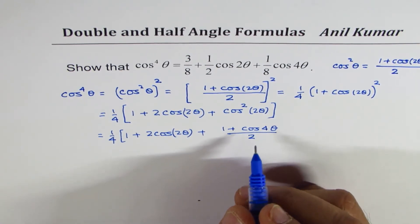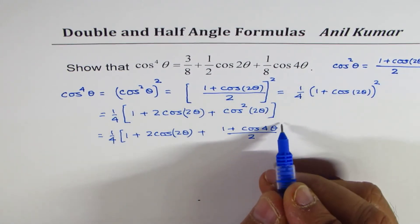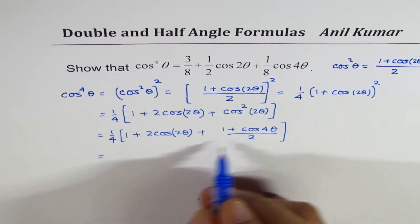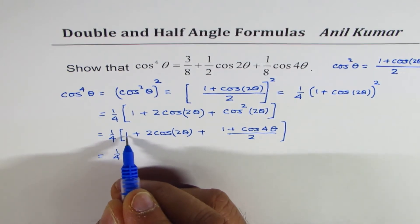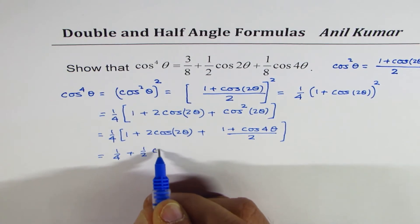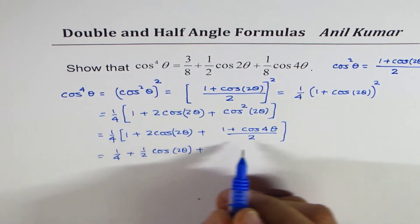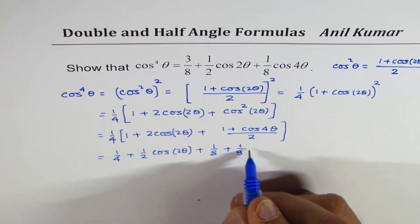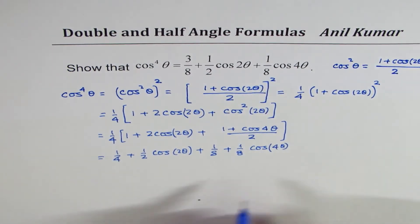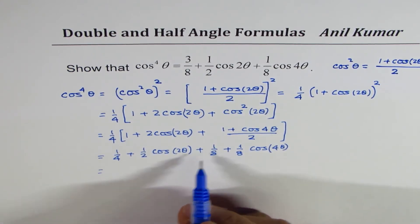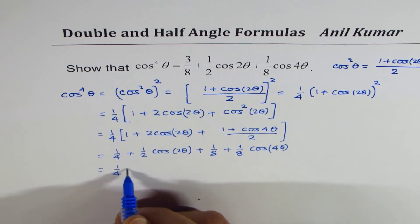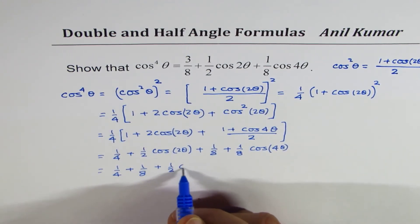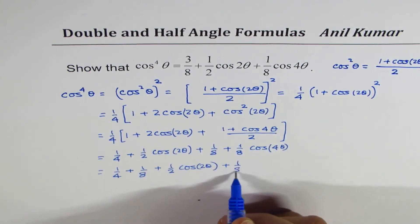So once I substitute that, opening the bracket I get: 1 over 4, then 1 over 4 multiplied through gives 1 over 4, plus half of cos 2 theta, and this 4 gets multiplied by 2 giving 8, so I get 1 over 8, plus 1 over 8 cos 4 theta. We can now combine the constant terms: 1 over 4 plus 1 over 8, and we already have half of cos 2 theta plus 1 over 8 cos 4 theta.